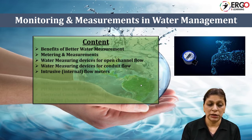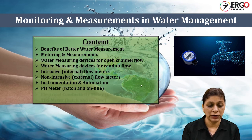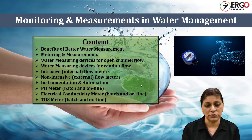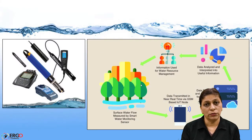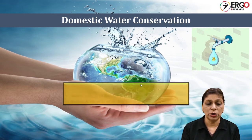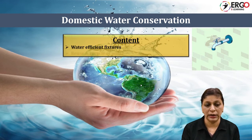There is also a discussion of internal as well as external flow meters. Three important properties of water to be monitored — pH, conductivity, and TDS — and how to measure them are also part of this video series. Then how to preserve water use in domestic applications is explained, covering water efficient fixtures and how to adopt recycle and reuse strategies for domestic application.